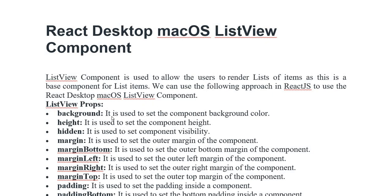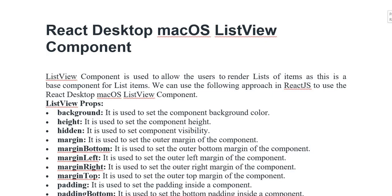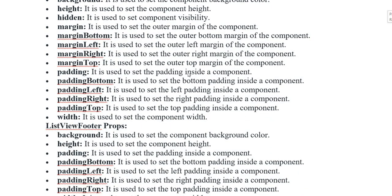ListView props: Background — used to set the component background color. Height — used to set the component height. Hidden — used to set the component visibility. Margin — used to set the outer margin of the component, including margin bottom, left, right, and top. Padding — used to set the padding inside the component, including padding bottom, left, right, and top. Width — used to set the component width.